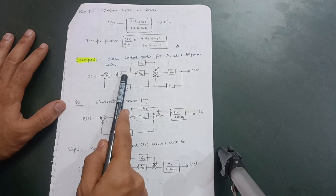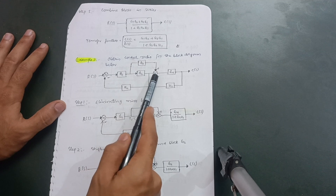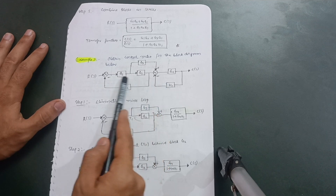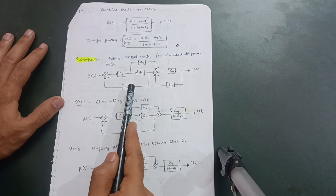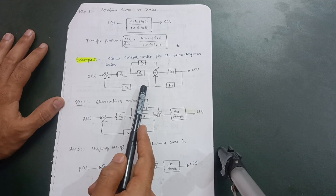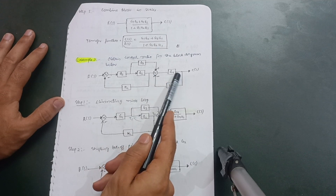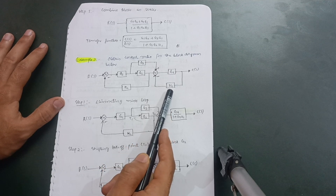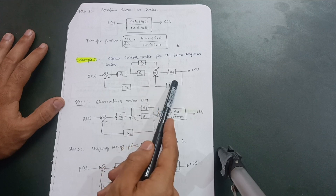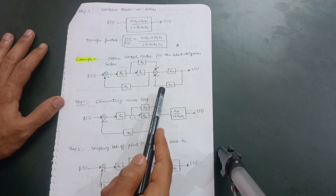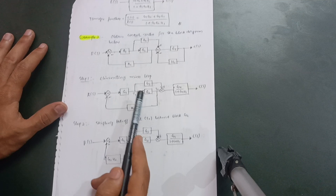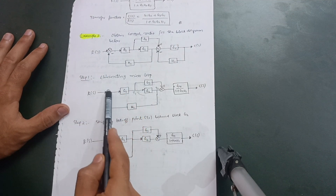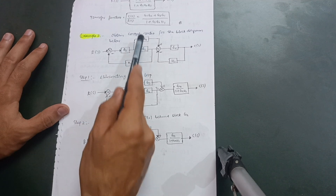Let's start the problem. This is the summing point, this is the G1 block, G2, G3 — these are the forward paths — and this is the feedback point. If you observe, when we have the canonical form — meaning one summing point and one feedback point — with one forward path and one feedback path in between, that is called a minor loop. I can reduce it by eliminating the minor loop using the formula, keeping the rest of the diagram as it is.